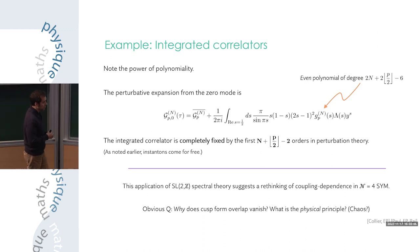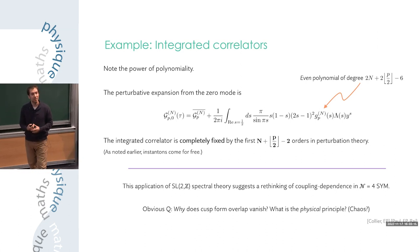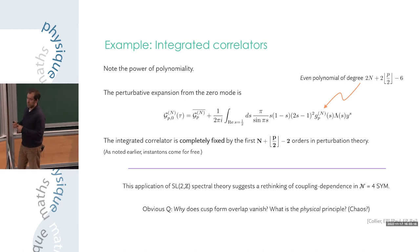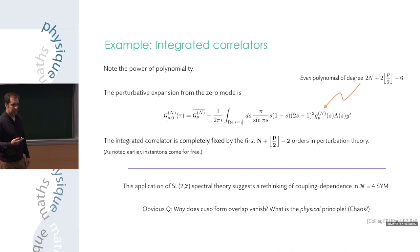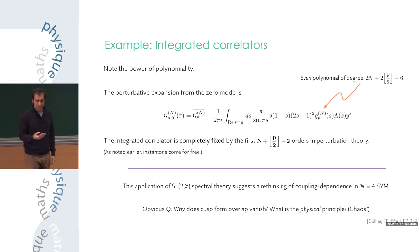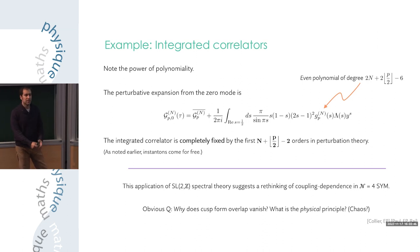Personally I find this application very suggestive that we need to think more deeply about coupling dependence in general in this theory. An obvious question is: why does the cusp form overlap vanish for these observables? What is the physical principle? What is the meaning of the absence of the arithmetic chaos associated to the cusp forms? And will it still be true that the spectral basis is useful when you have non-zero cusp form overlap for more generic observables? I think this case is so striking that it deserves further thought.